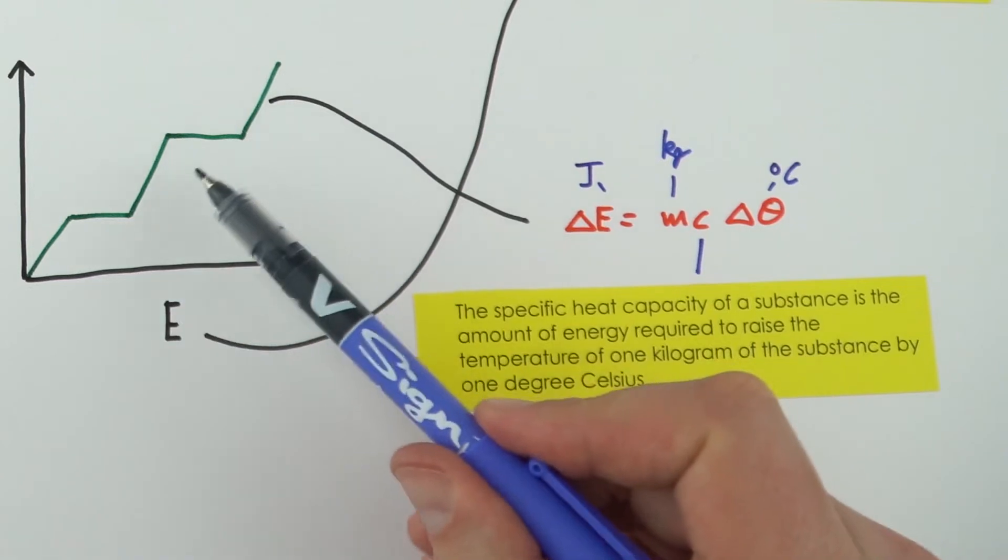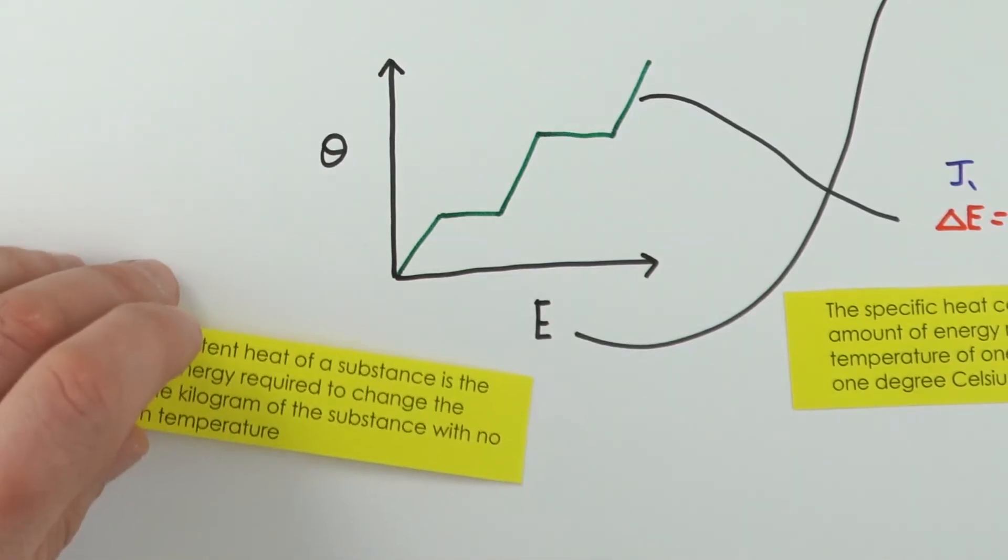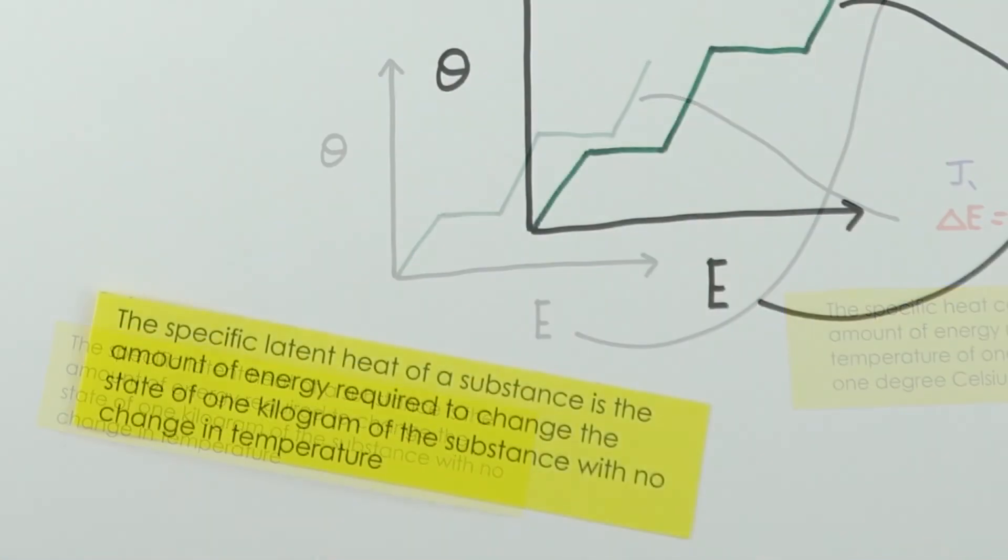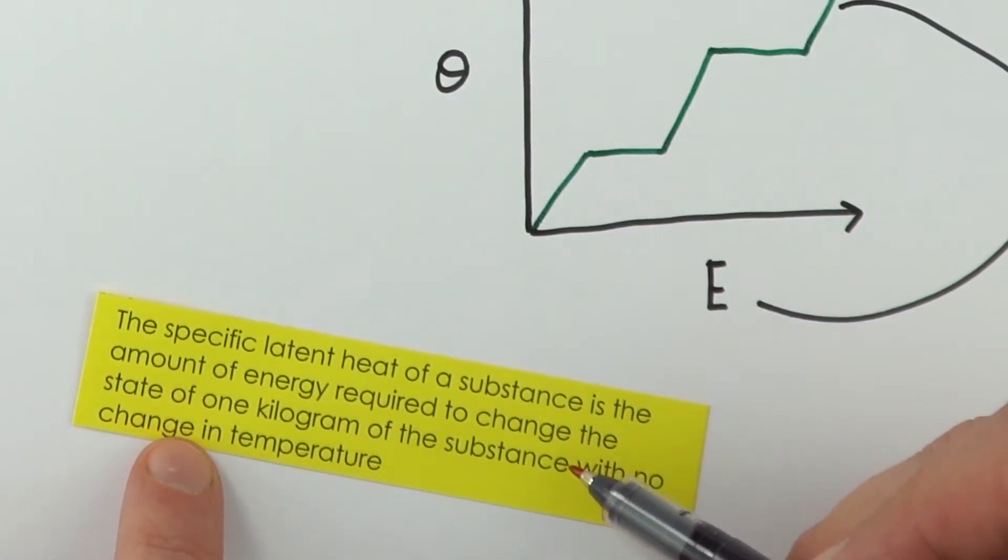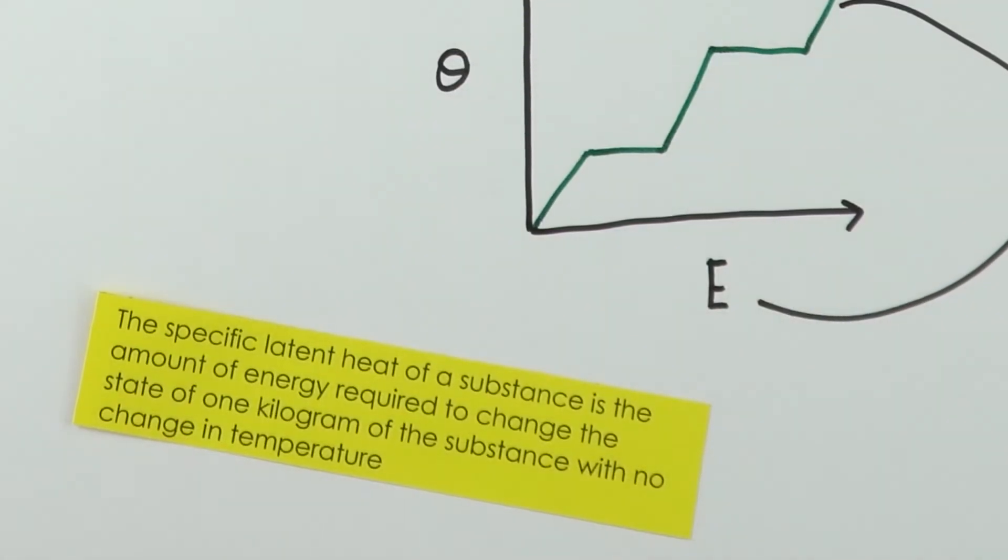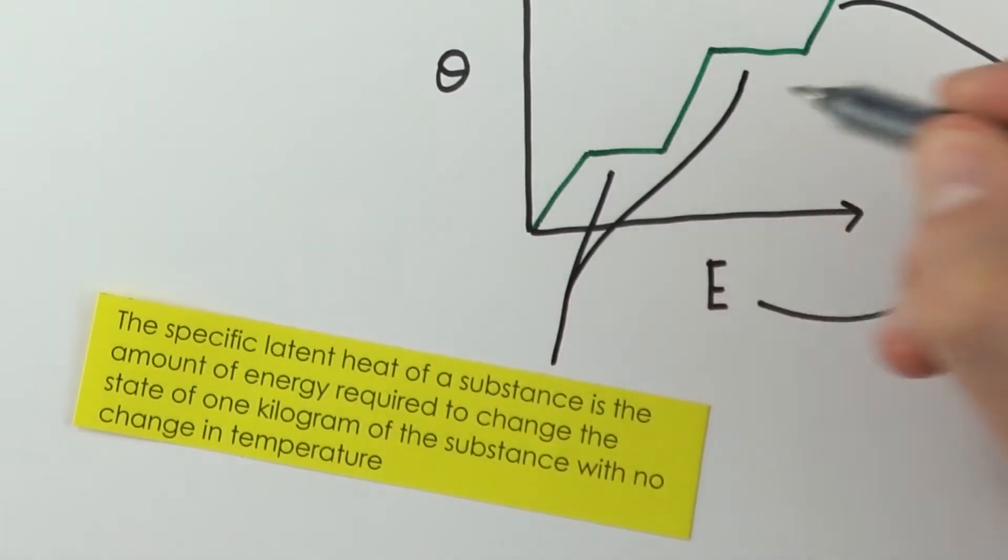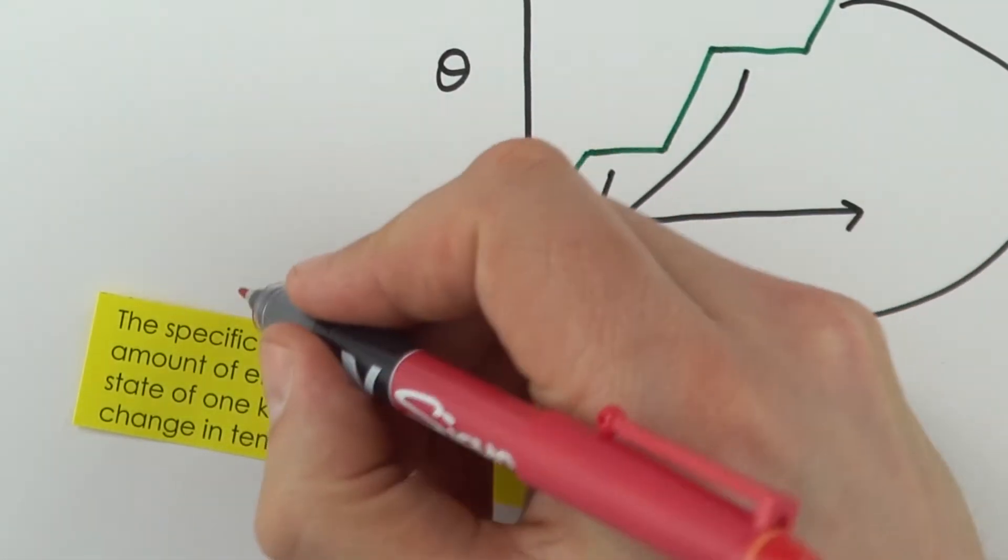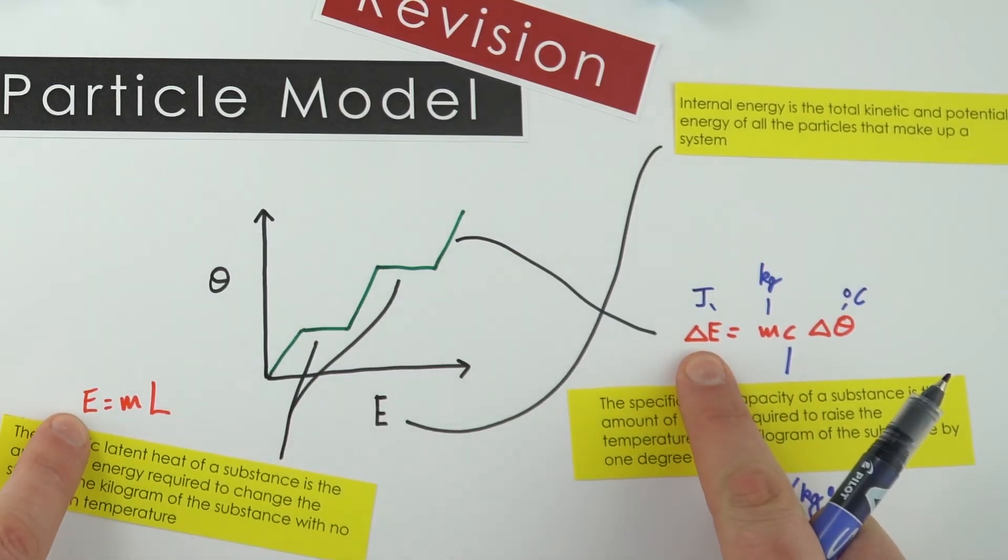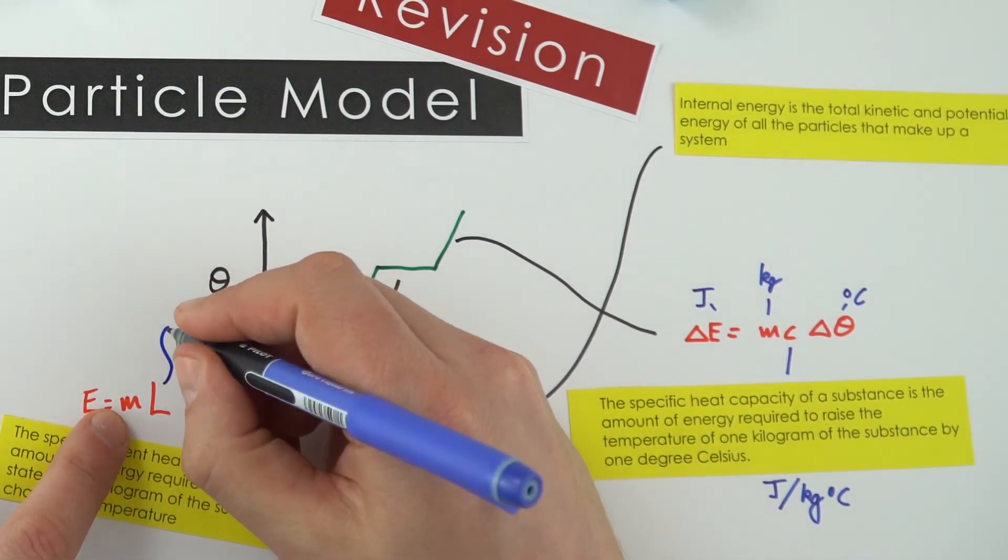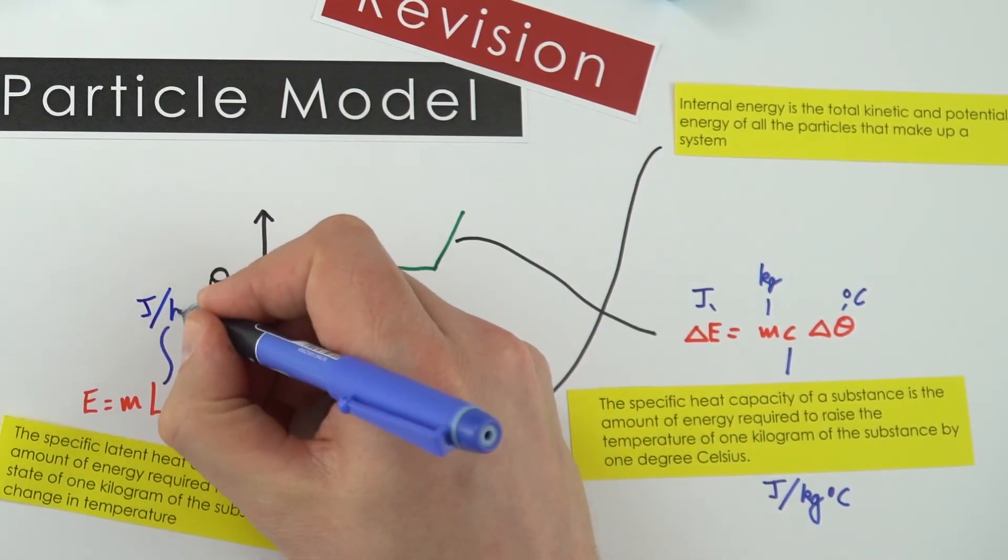What happens when something is changing state? Here the temperature doesn't change, and we need to think about something called the specific latent heat. This is defined as the amount of energy required to change the state of one kilogram of the substance with no change in temperature. This is where we're looking at this region on the graph. The equation we can use is E equals ml. Once again, we measure energy in joules, mass in kilograms, and that means the units for specific latent heat are joules per kilogram.